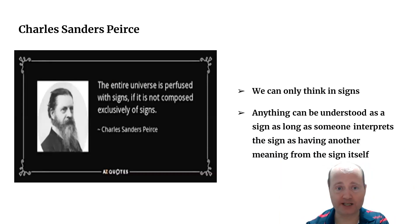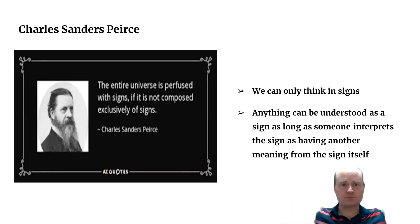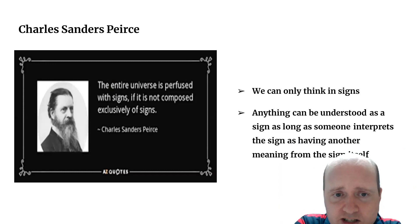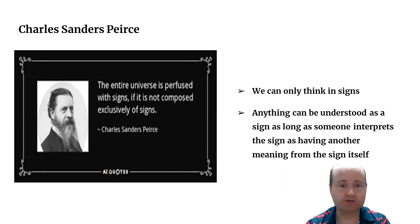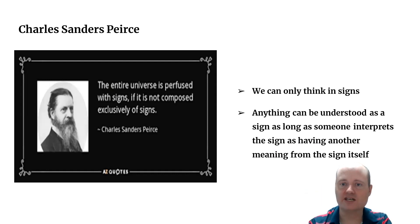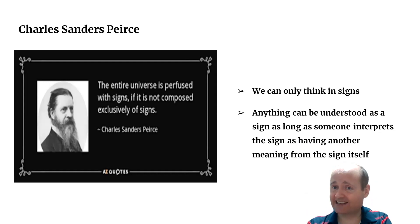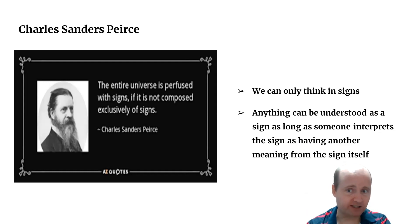Charles Sanders Peirce said: 'The entire universe is perfused with signs — if it is not composed exclusively of signs.' Signs are everywhere. He also said we can think only in signs, and anything can be understood as a sign as long as someone interprets it as having another meaning beyond itself.